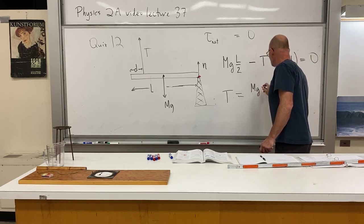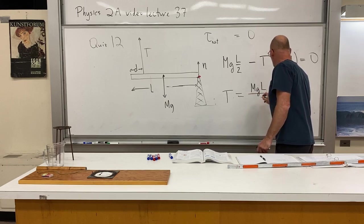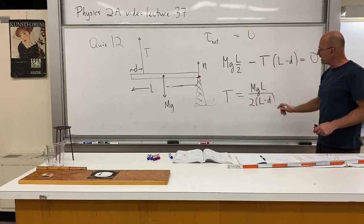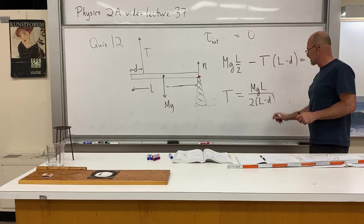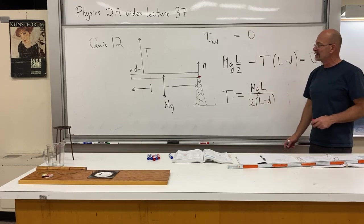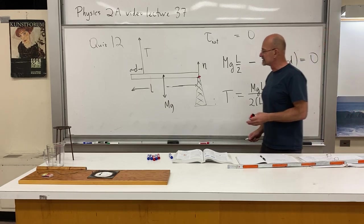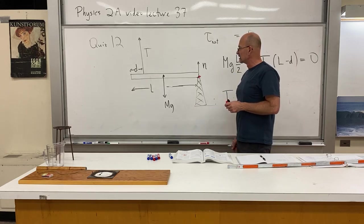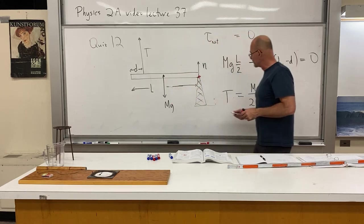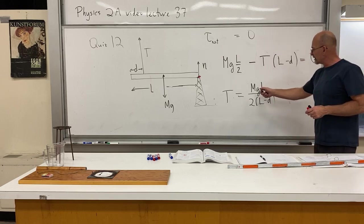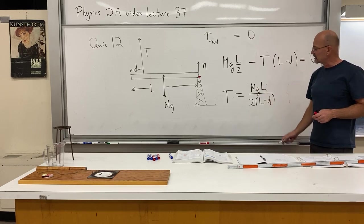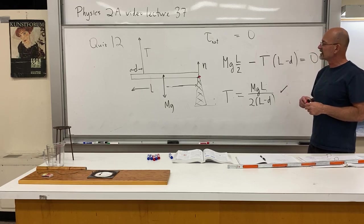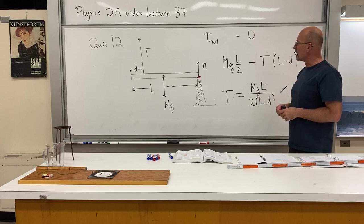The tension is T = mgL / (2(L − d)). We were given m, L, and d — the program generates random values in some range — so you plug in your mass, your length, and that length d, and you've got the tension. A perfect elementary torque problem.